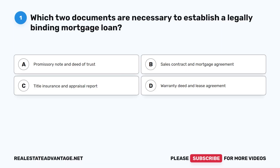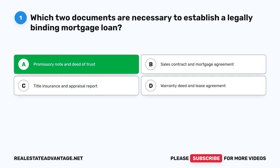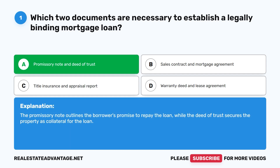Question 1: Which two documents are necessary to establish a legally binding mortgage loan? A. Promissory Note and Deed of Trust. B. Sales Contract and Mortgage Agreement. C. Title Insurance and Appraisal Report. D. Warranty Deed and Lease Agreement. The correct answer is A: Promissory Note and Deed of Trust. The promissory note outlines the borrower's promise to repay the loan, while the deed of trust secures the property as collateral for the loan.